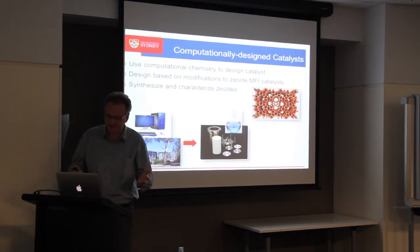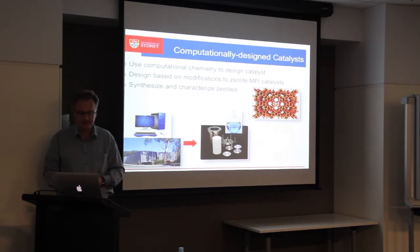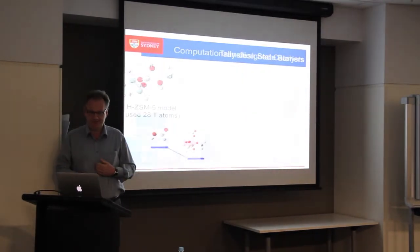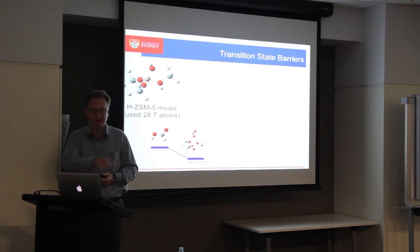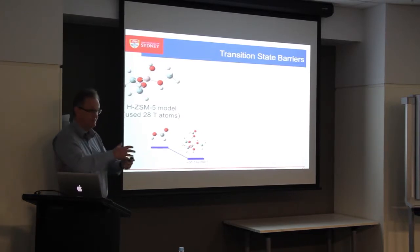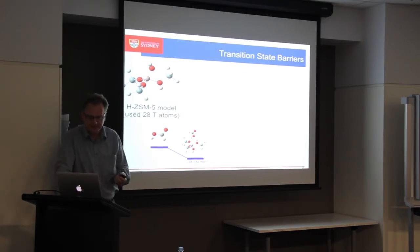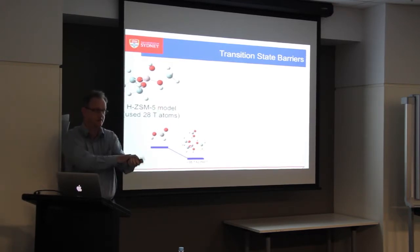Once we'd confirmed in the computer that it looks really good, we tried to make it, and once we made it, we tried to test it. Starting off with a 28T atom model — I'm showing a smaller one so it's not just blobs on the screen. The first thing that happens is formic acid interacts with the surface and the overall system energy decreases, which is why it adsorbs on the surface.